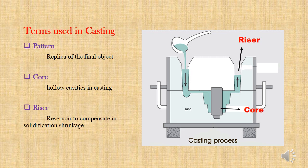Pattern is the replica of the final product. Pattern is used to create an impression of the final product in sand and it is removed to create the mold cavity. Core is used to create a hollow cavity in casting. In the diagram we can see the core, which is made of sand, is fixed between the mold. After making the final casting the core is destroyed to make the hollow shape.